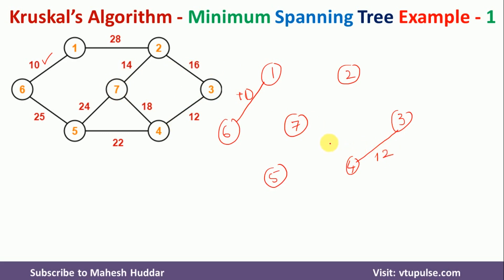Next, among the remaining edges, the edge between 2 and 7 which is having the weight 14, that is the minimum. So we will draw that particular edge here.